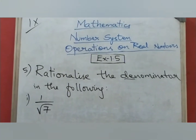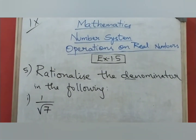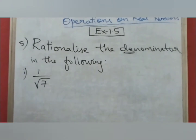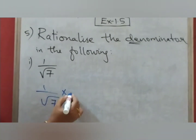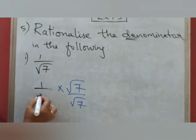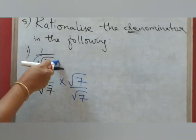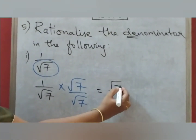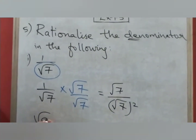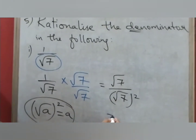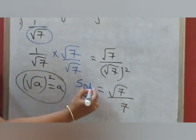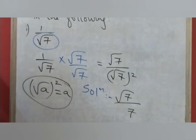On real numbers Exercise 1.5, we will do problem 5 which says rationalize the denominator in the following. The first question is 1 by √7. Since we are rationalizing the denominator, we multiply and divide by the same denominator √7. So 1 into √7 gives √7 in the numerator, and √7 into √7 is (√7)² which equals 7. So the answer is √7 by 7. This is the solution children.